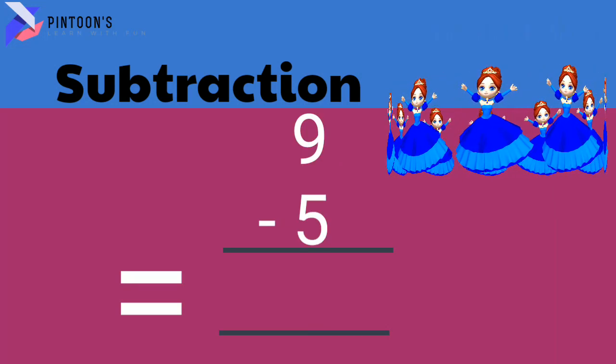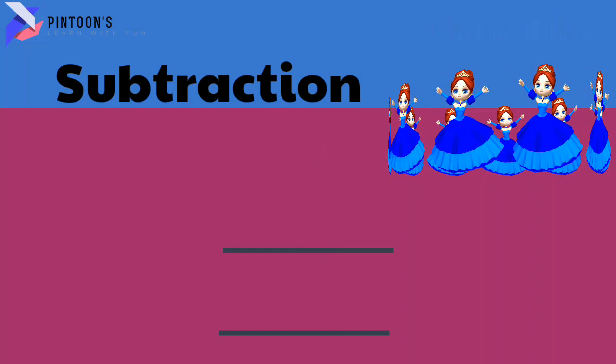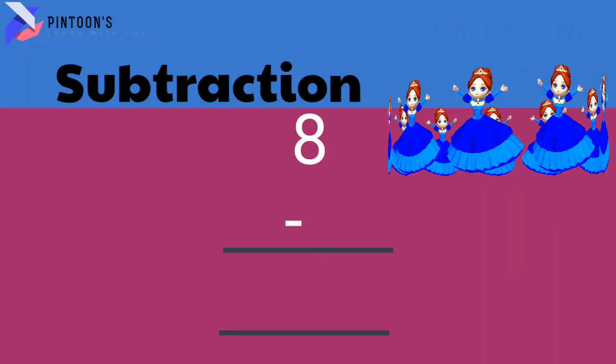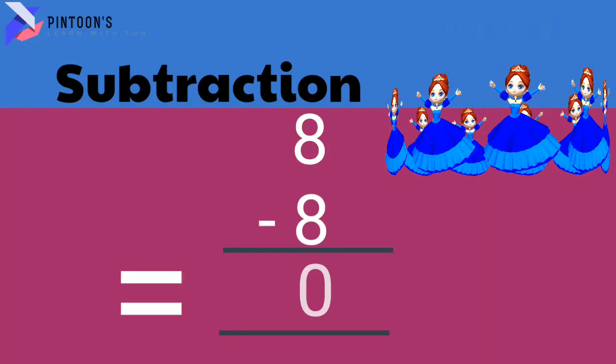9 minus 5 equal to 4. 8 minus 8 equal to 0.